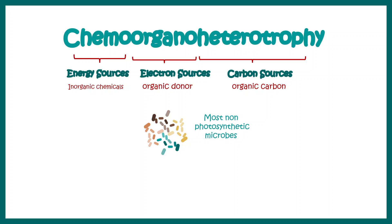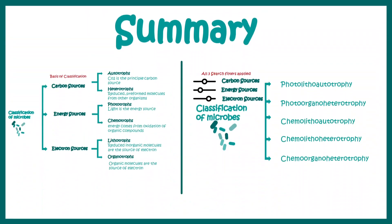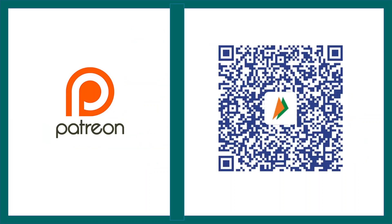We started with complicated names, but now we understand how to read them and what they tell us about bacteria's nutritional requirements. Overall, in this video we looked at the basis of classification: we can use one criterion as a single filter, or a combination of criteria as multiple filters. Using three criteria together, we classified bacteria into five groups and understood their nutritional requirements in terms of sources of carbon, energy, and electrons.